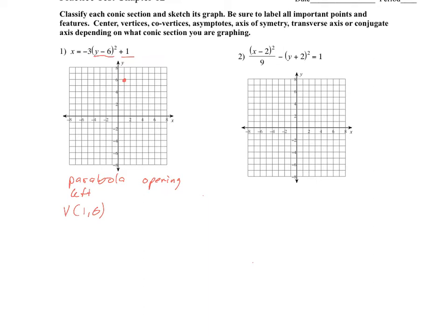A is negative 3, so the absolute value of negative 3 is equal to 1 over 4p. P gives us the distance from the vertex to the focus and from the vertex to the directrix. Solving, we get 12p equals 1, or p equals 1/12.